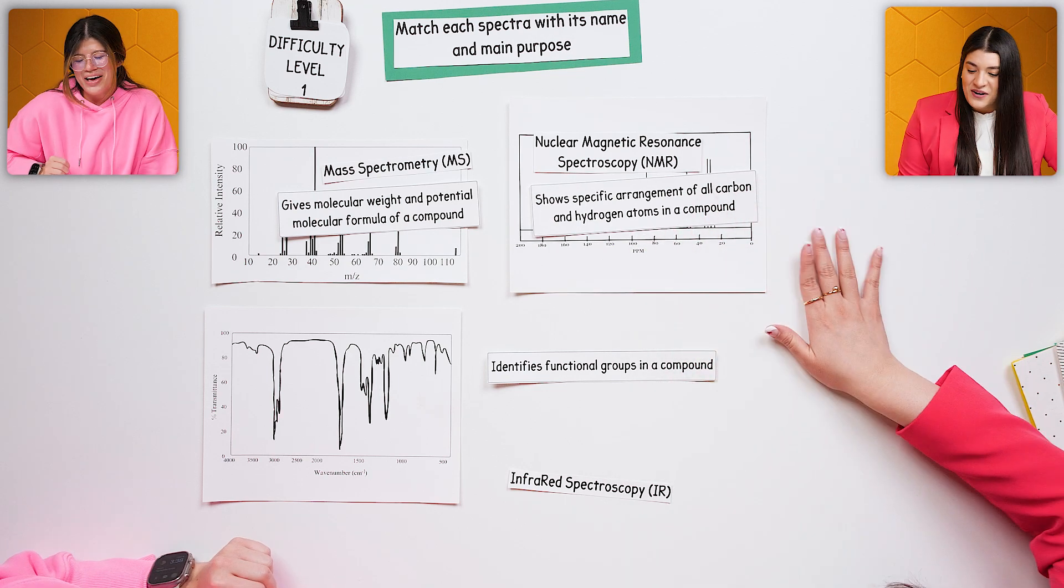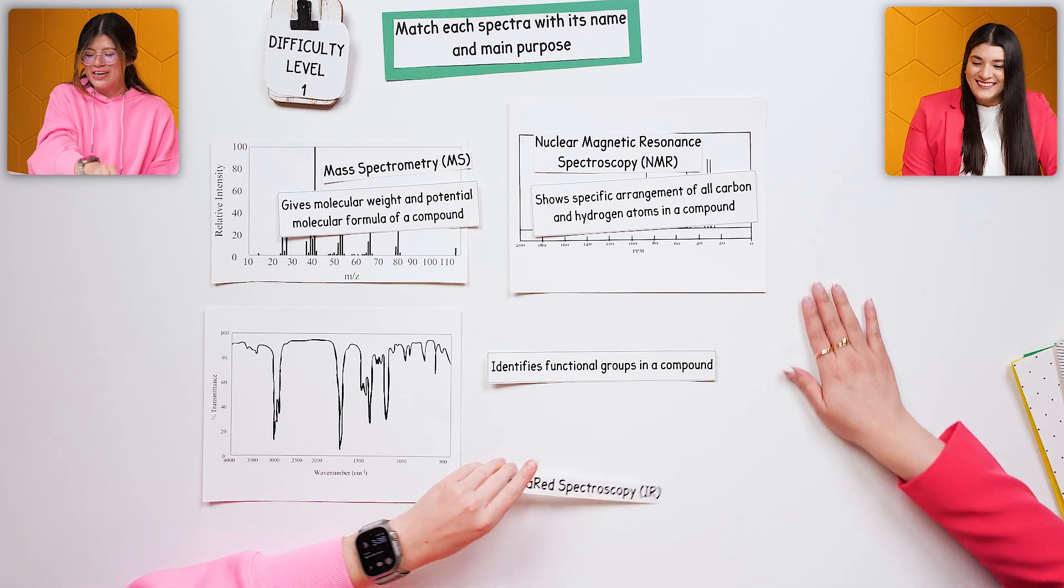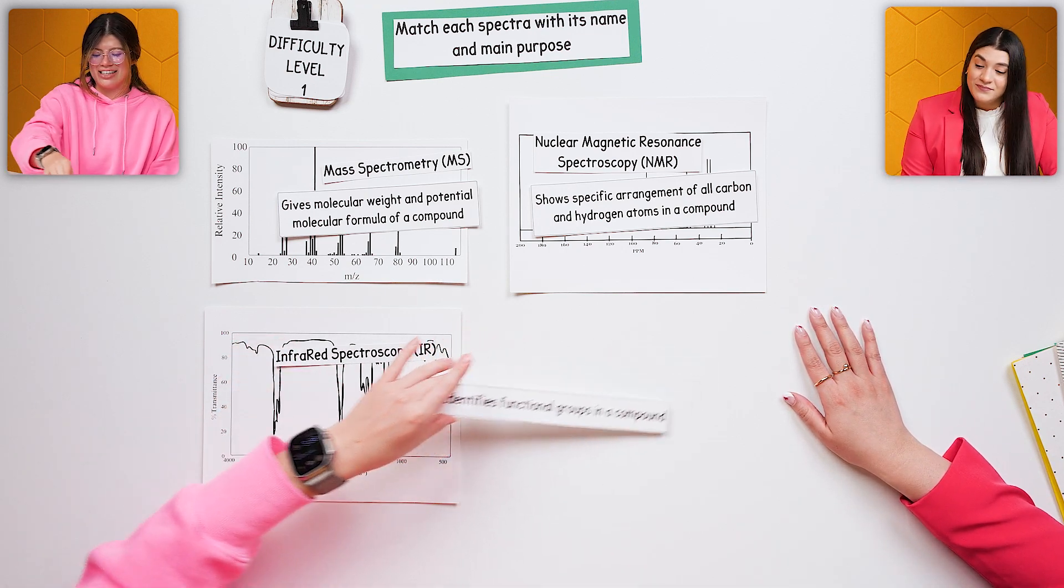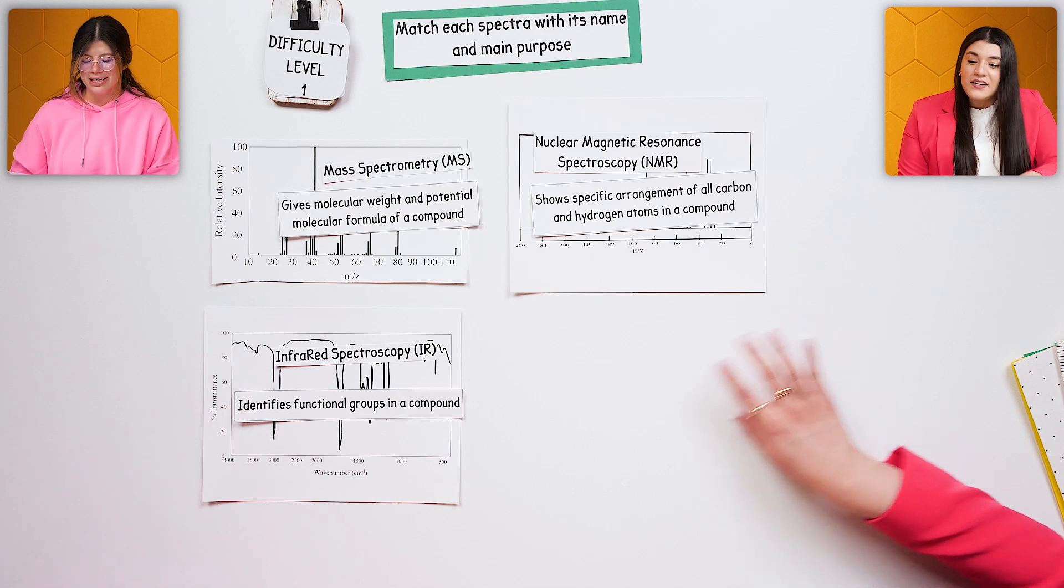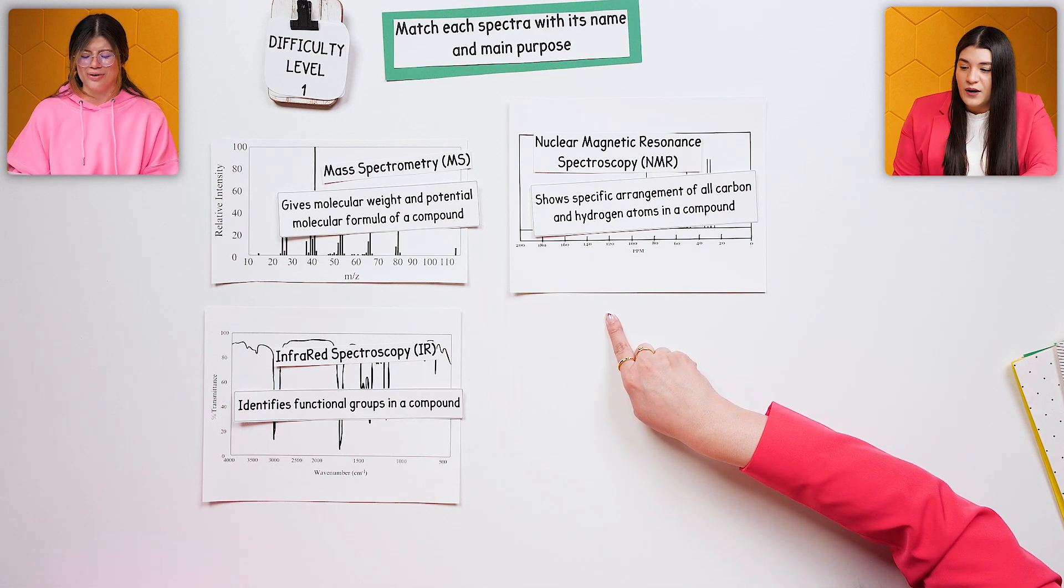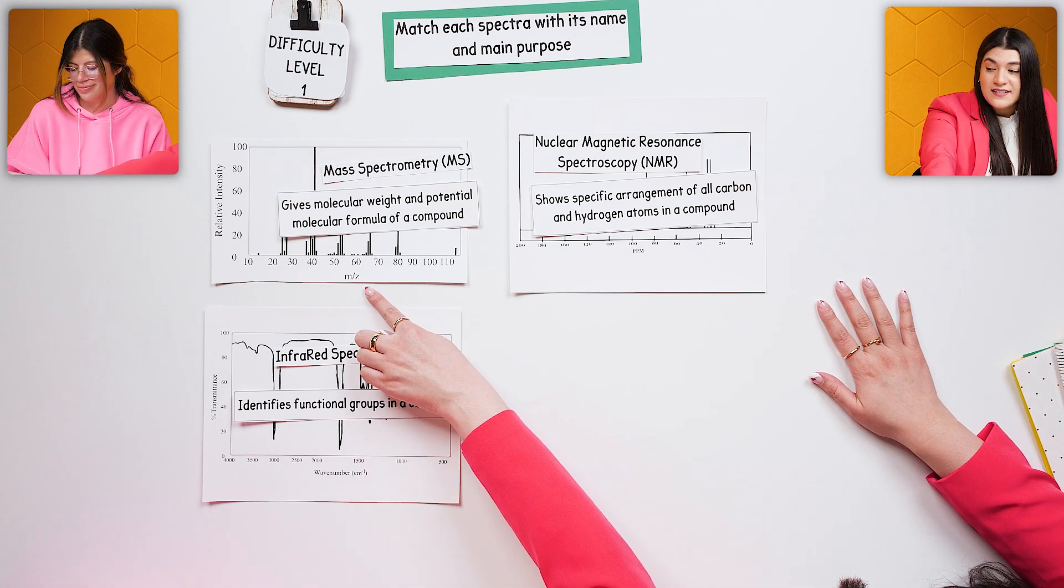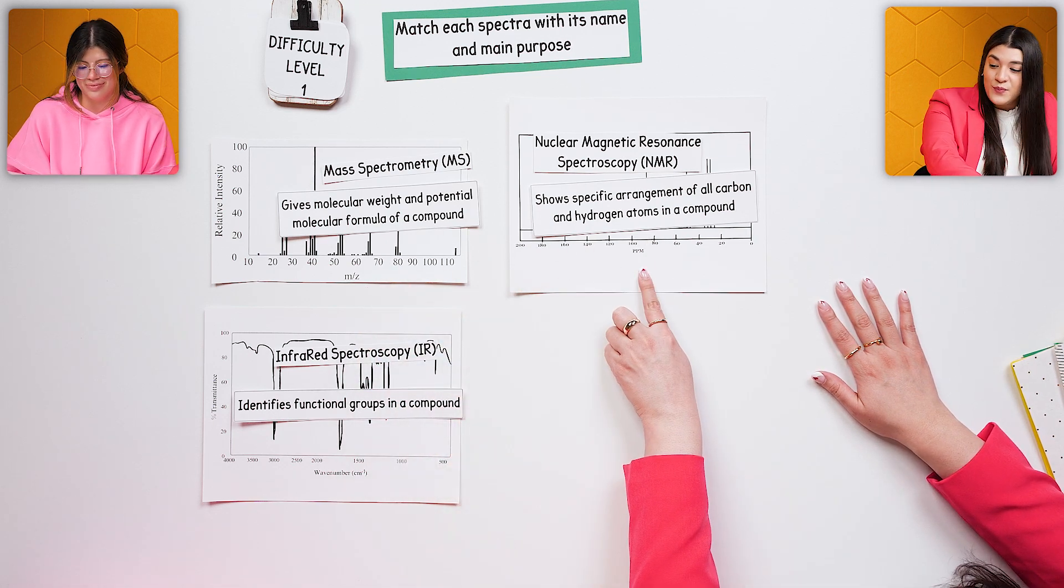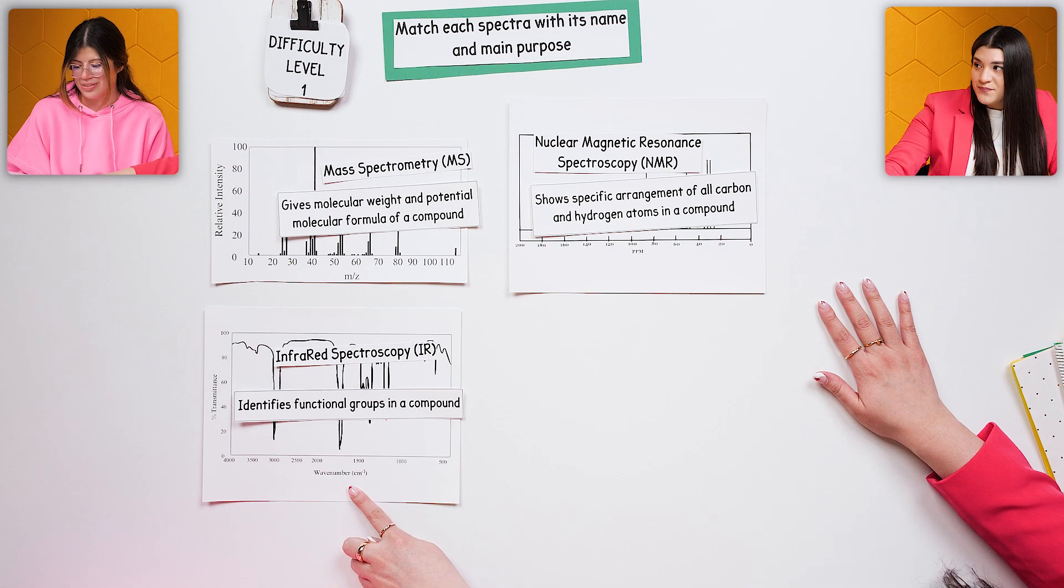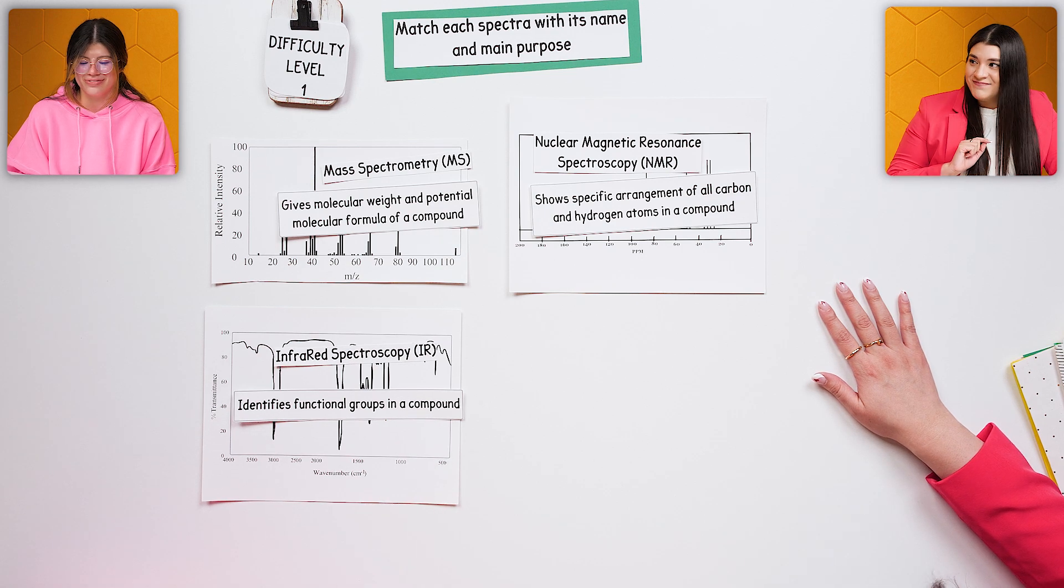And then we have the last one here. Love it. But this is also the easiest to identify. Yes. Because it's all about functional groups. And it looks so different than the other ones as well. So different. Another thing is knowing the x-axis, seeing that this is mass per charge, this is parts per million, and this is the wave number. That totally is true.